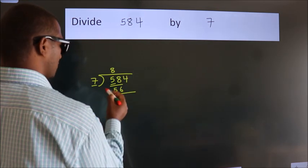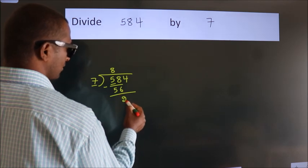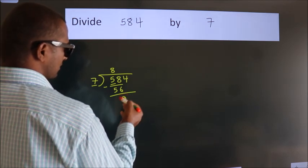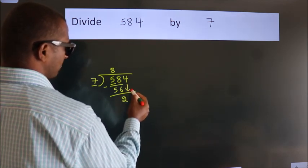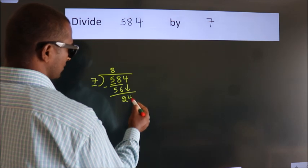Now we should subtract. We get 2. After this, bring down the beside number, so 4 down. So 24.